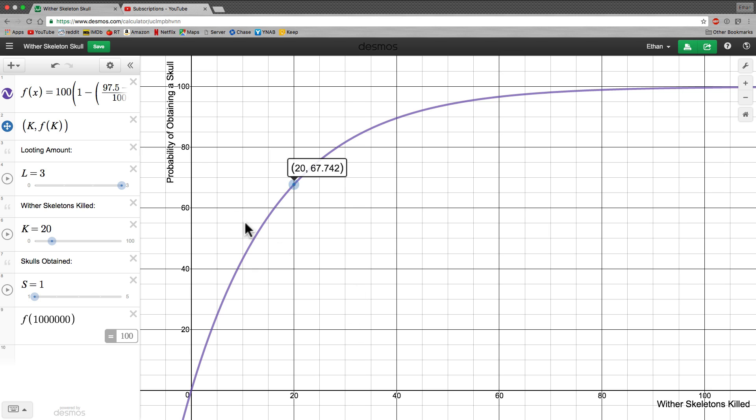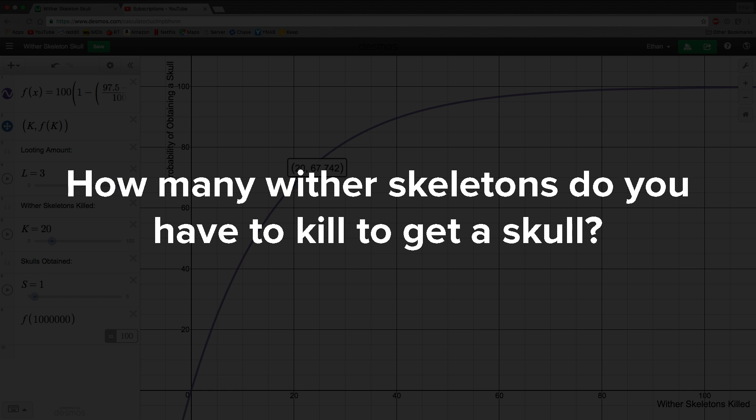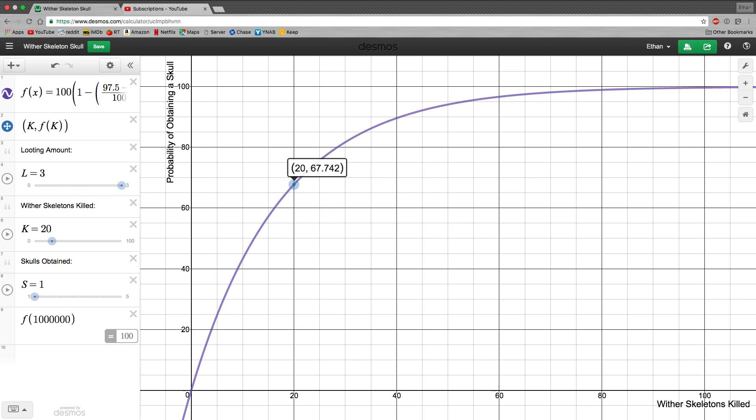So with all of this in mind and this graph we have, the title of this video is, How many Wither Skeletons do you have to kill to get a skull? Obviously this is not a numerical answer like 45 or whatever.